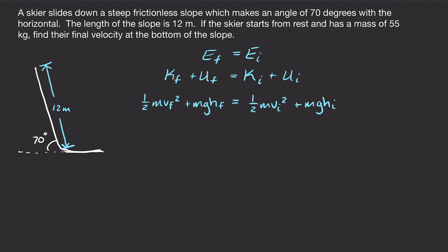At the top where we start, the skier is starting from rest, so the initial velocity is zero and initial kinetic energy is zero. When we get to the bottom, we'll call this y equals zero, so the final height is zero and the gravitational potential energy at the end disappears.